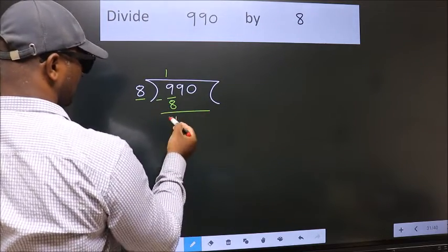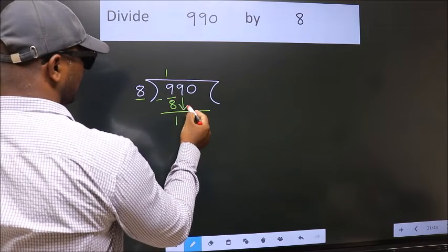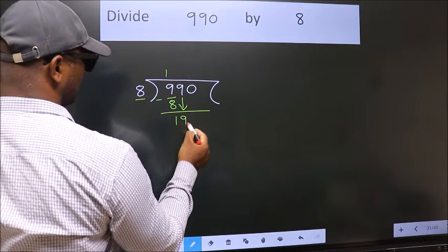We get 1. After this, bring down the beside number. So, 9 down. So, 19.